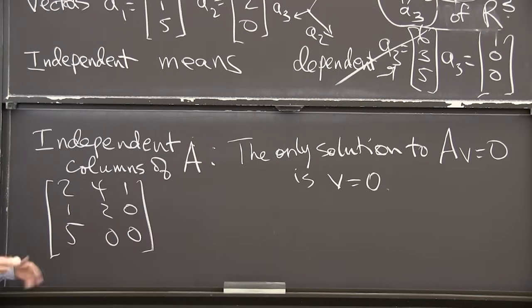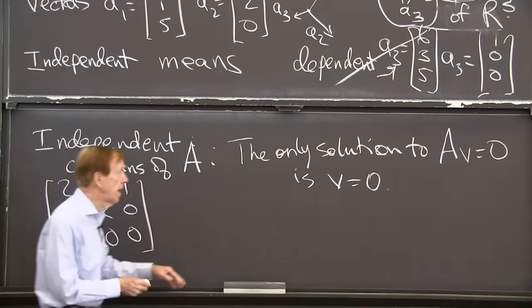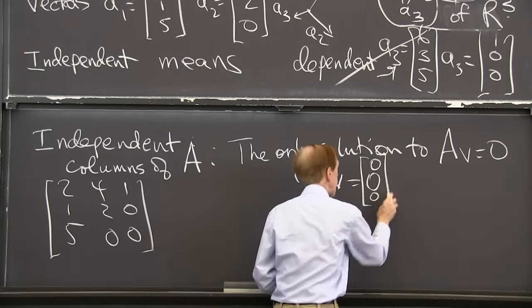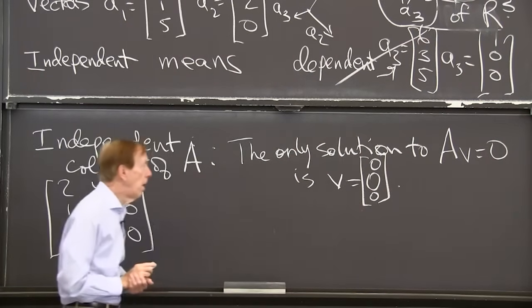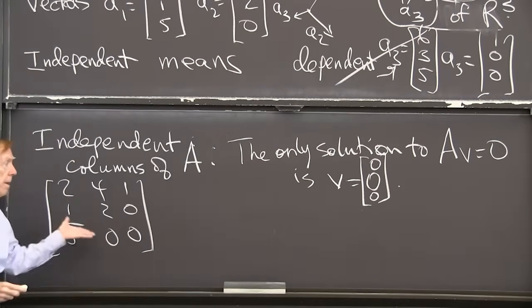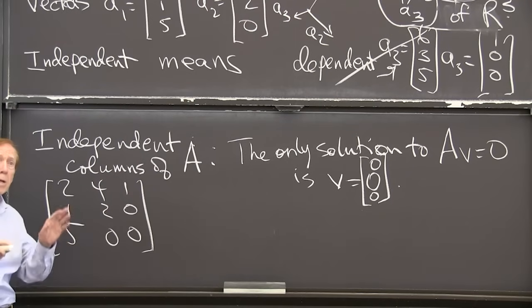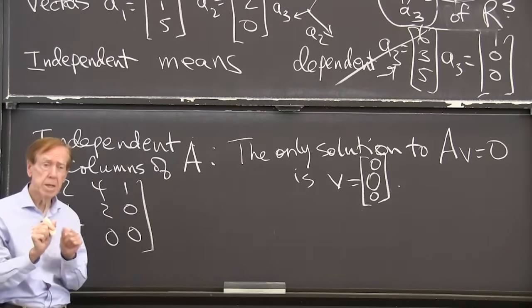So its column space is the full three-dimensional space. Its null space only contains, let me put it, make that clear that that's a vector. And now I'm ready to explain, write down the idea of a basis.